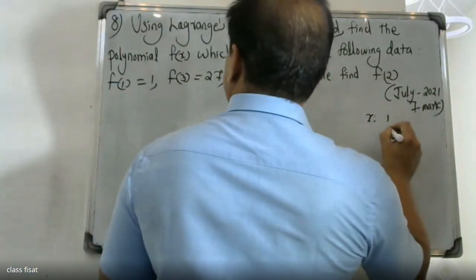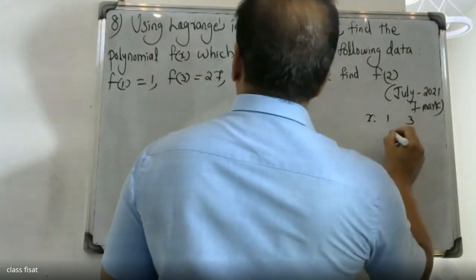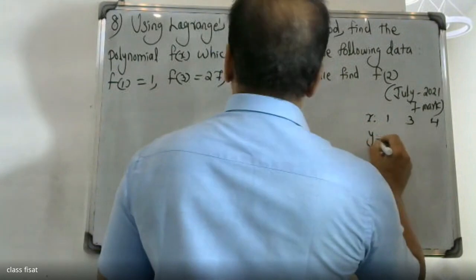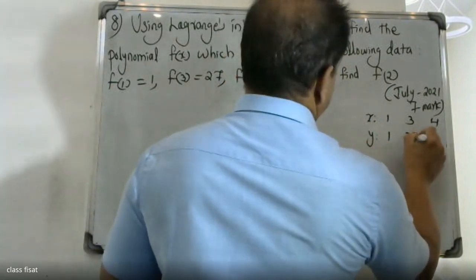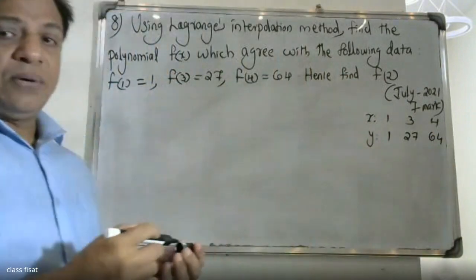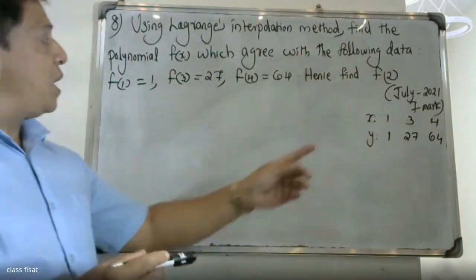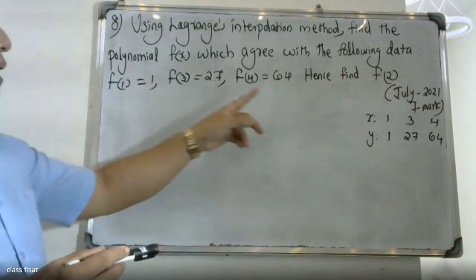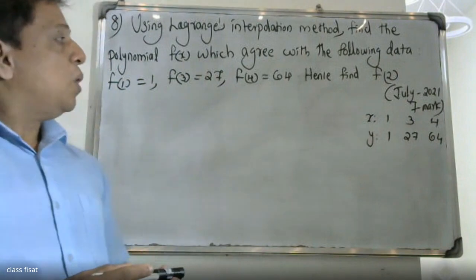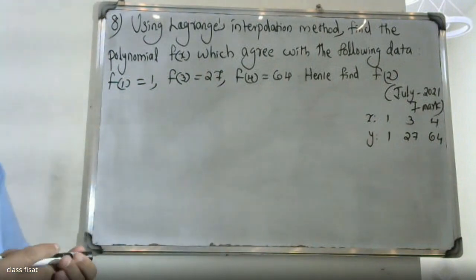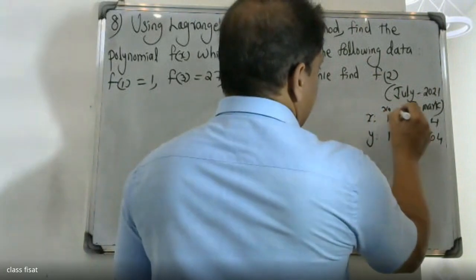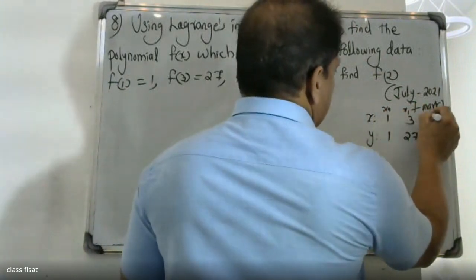We set up our data table. The x values are 1, 3, 4 and the corresponding y values are 1, 27, and 64. So x0=1, y0=1; x1=3, y1=27; x2=4, y2=64.